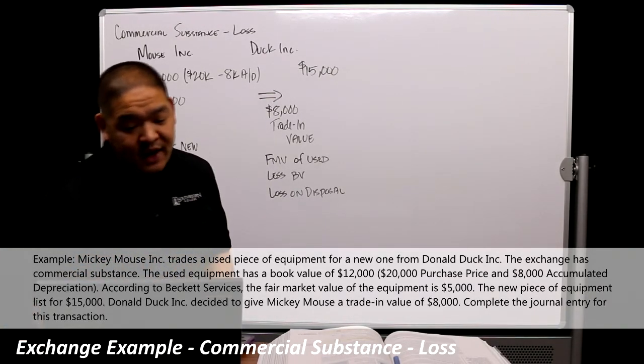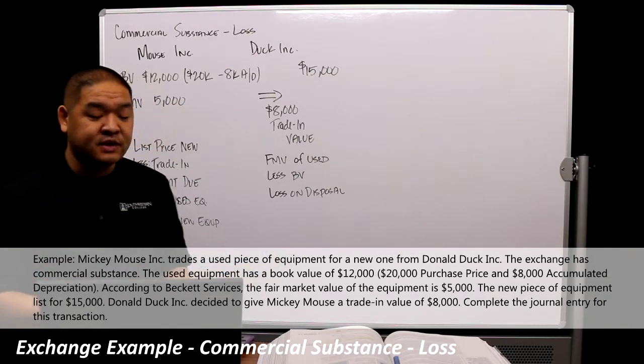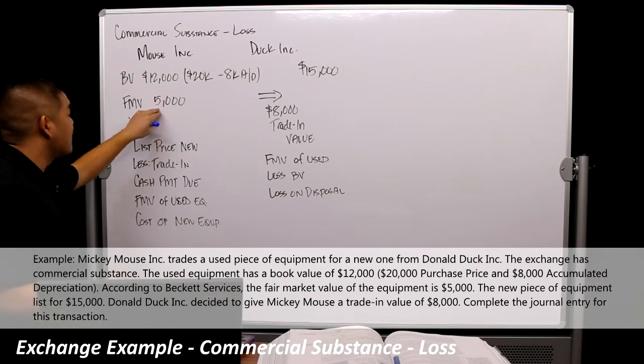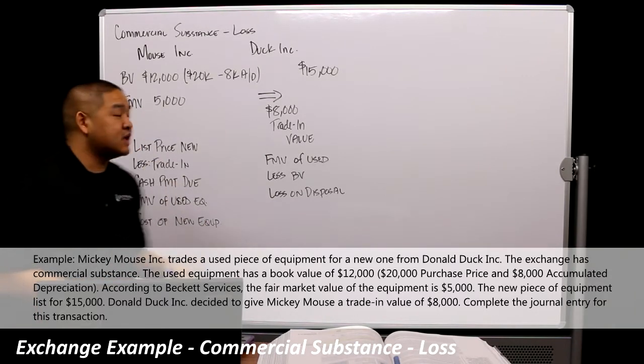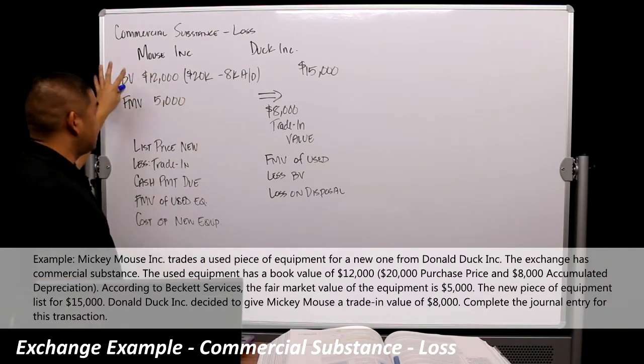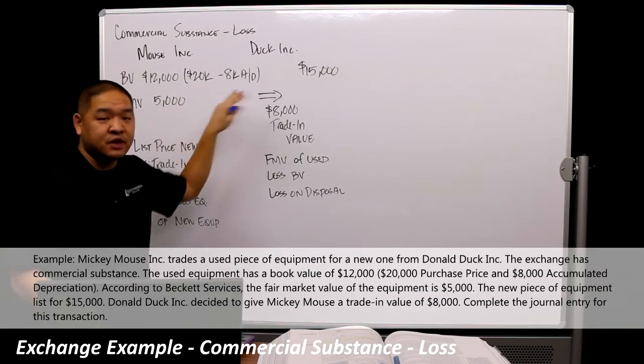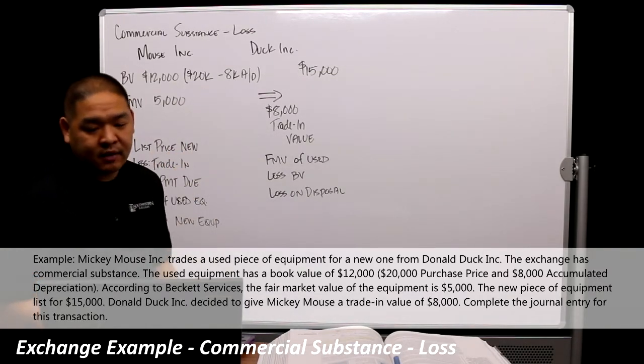Now, according to Beckett Services, this is a third-party valuation service. The fair market value of the equipment is $5,000. So this service company says it's really only worth $5,000, it's not worth $12,000. So that's an issue of just estimating correctly what depreciation should have been over time. We didn't get that right, but that's okay.